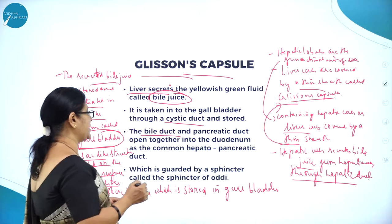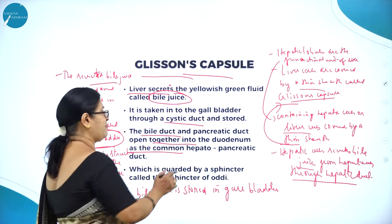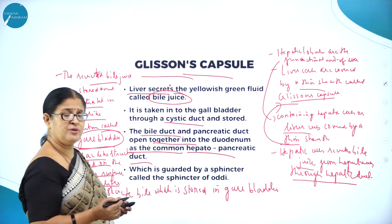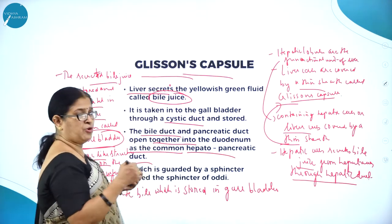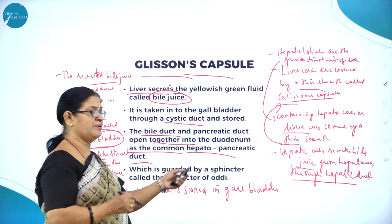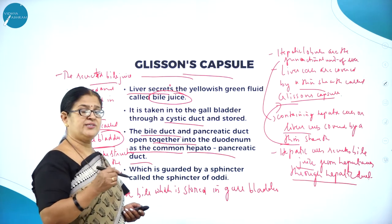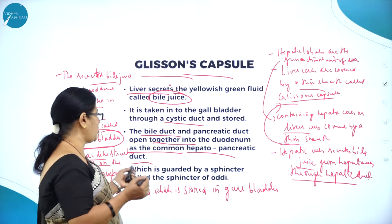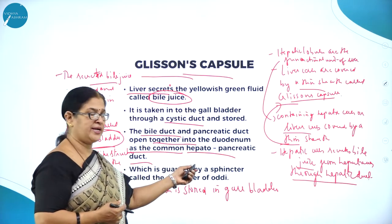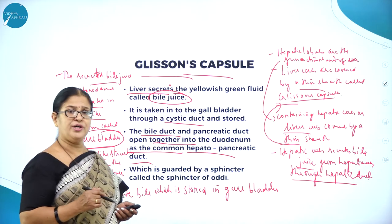The bile duct and pancreatic duct open together into the duodenum as the common hepatopancreatic duct. From the bile duct they open into a common duct called the hepatopancreatic duct — hepato meaning liver, and pancreatic referring to the secretions of the pancreas. They all come together through the hepatopancreatic duct and pour into the first part of the small intestine called the duodenum.